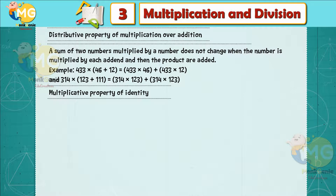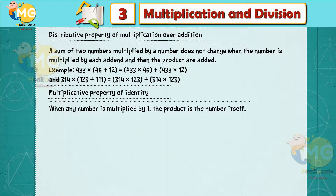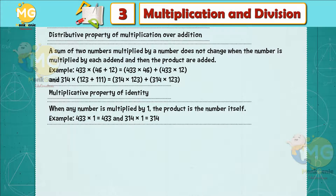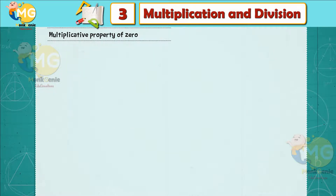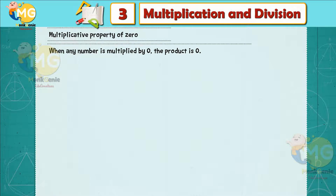Multiplicative property of identity: when any number is multiplied by 1, the product is the number itself. For example, 433 × 1 = 433 and 314 × 1 = 314.